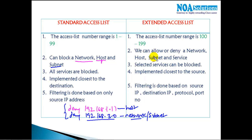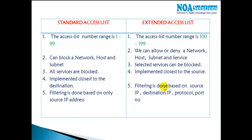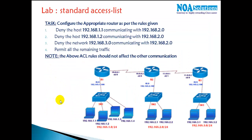Extended ACLs have the same features as standard — you can allow or deny a specific host, subnet, or network — but with one extra capability: you can allow or deny a specific service. Selected services can be blocked or permitted. That's one extra thing you can do with extended ACLs.